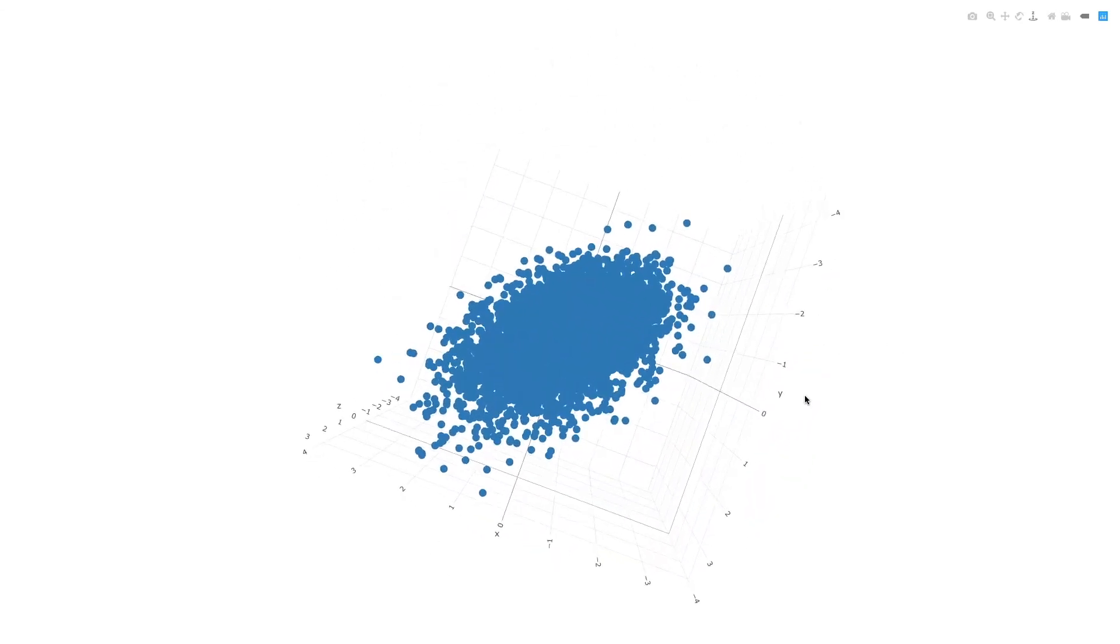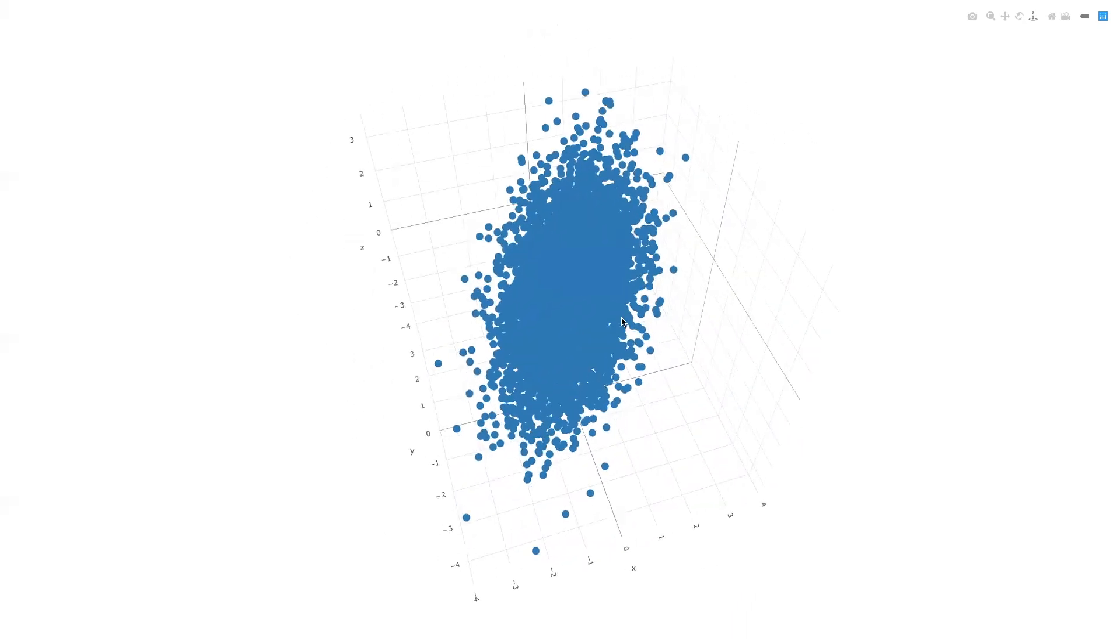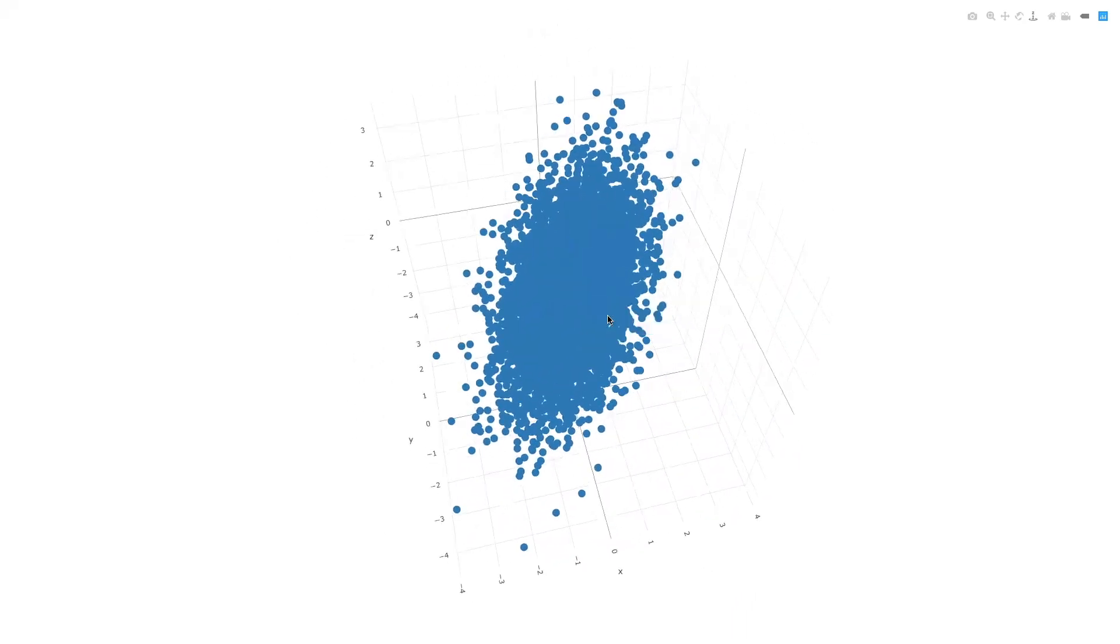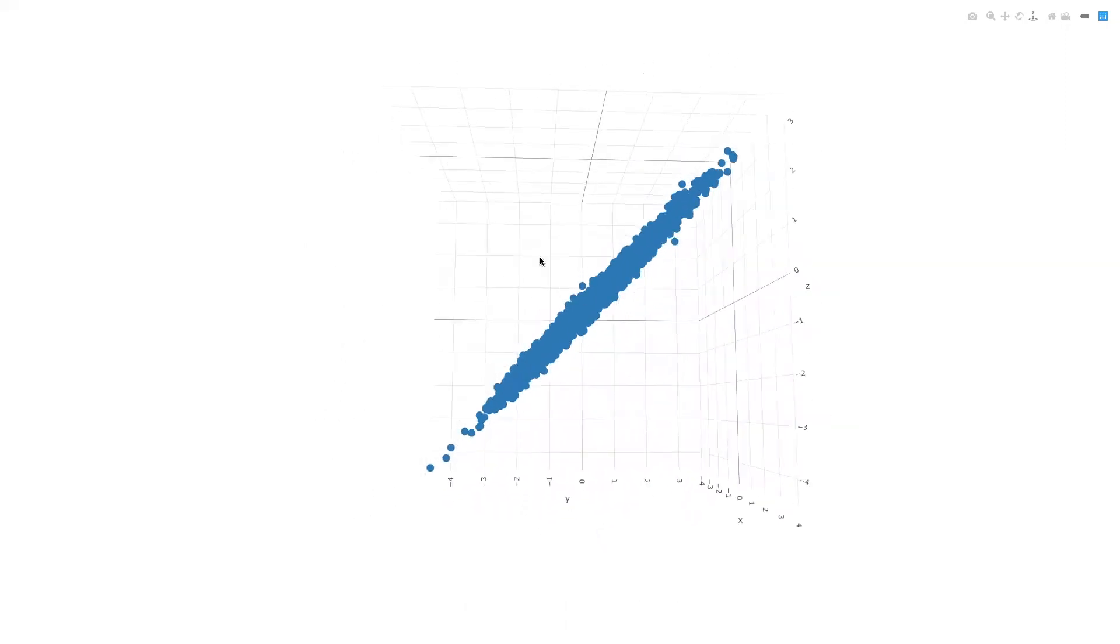We're going to draw the principal components. So now, sorry, it looks like the first principal component would go in this direction pointed by my mouth. The second principal component is orthogonal to that one. Looks like it goes in this direction. And then the third principal component would come out of the computer screen or down below this surface. So the third principal component is along that direction.